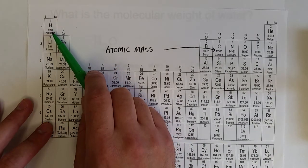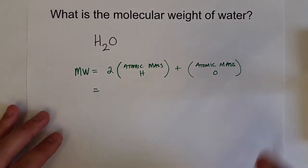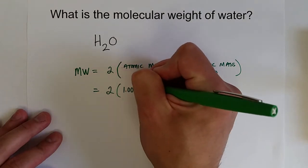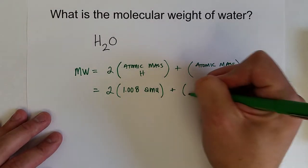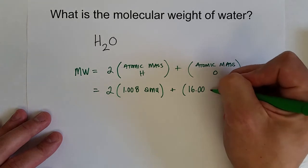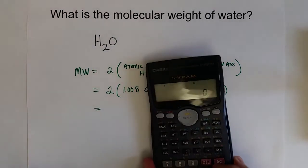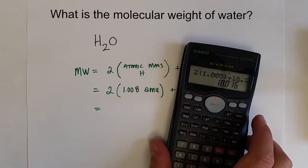We need to go to the periodic table to figure out the atomic masses for each individual atom. We've got hydrogen, 1.008, and then oxygen has an atomic mass of 16.00. So let's throw this into our calculation. 1.008 amu is the unit we're going to use right now, plus the atomic mass of oxygen, 16.00 amu. So if we punch this into our calculator, we've got 2 times 1.008 plus 16.00 equals 18.016.